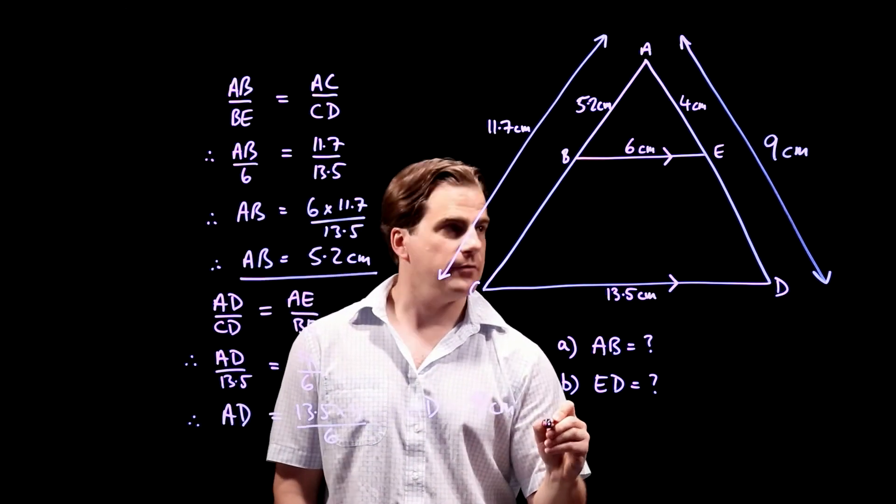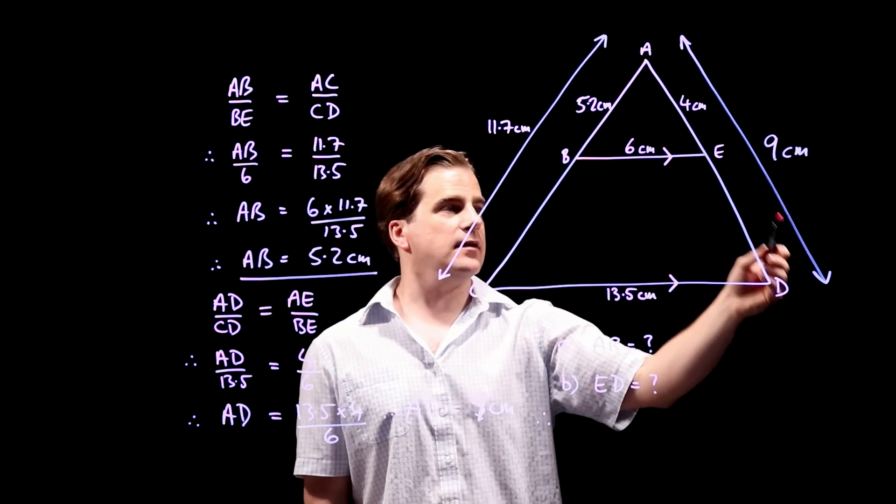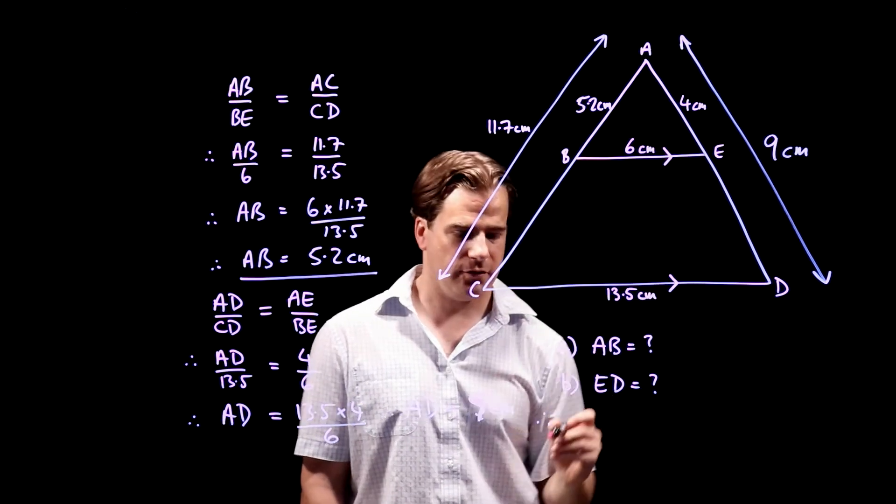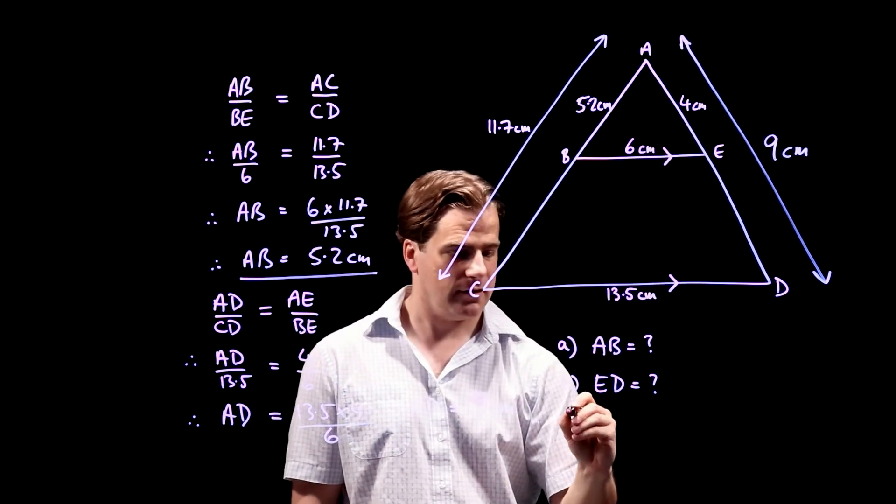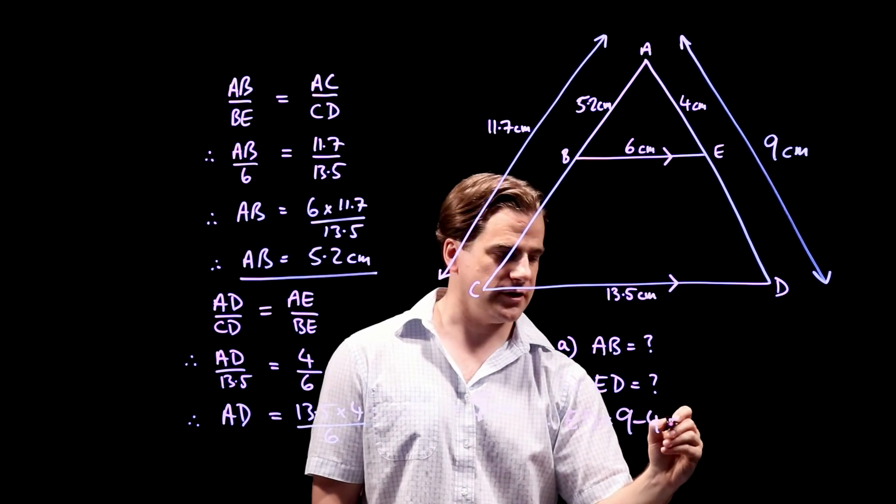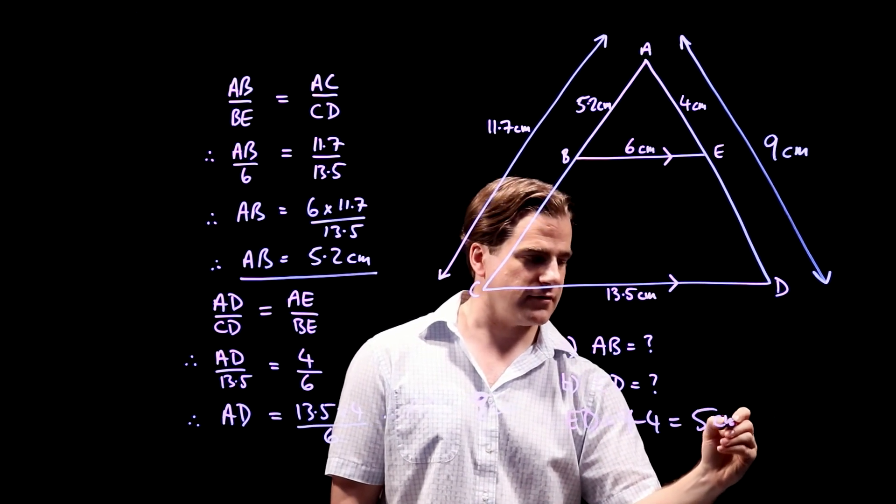And now we just subtract the 4 to get ED. So, therefore, the whole thing is 9 centimetres. So if everything is 9, then E to D must be 9 minus that bit, which is 4. So, ED is 9 minus 4, which is 5 centimetres.